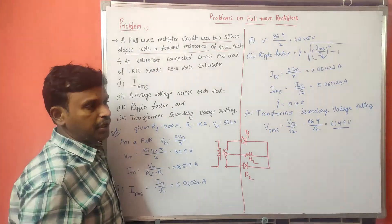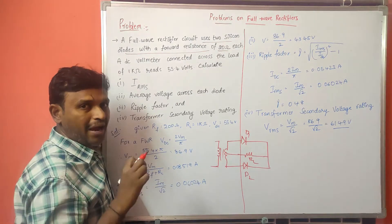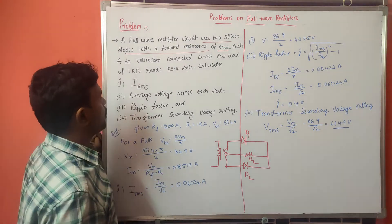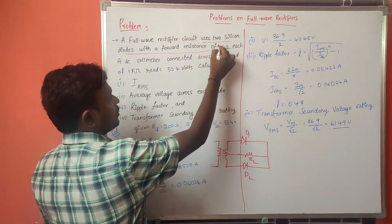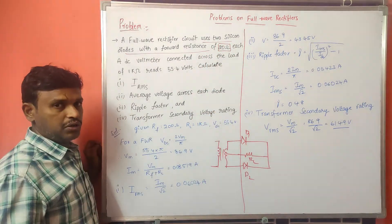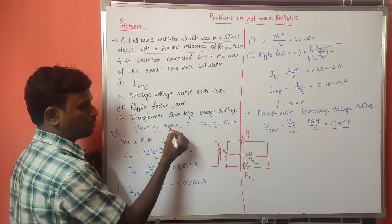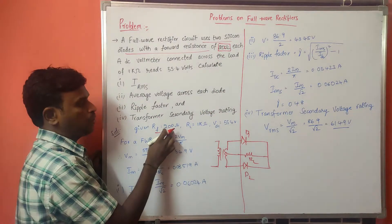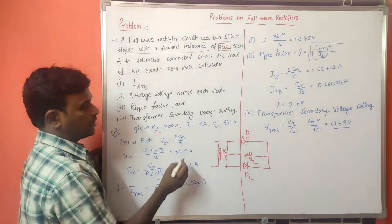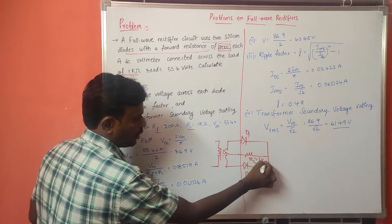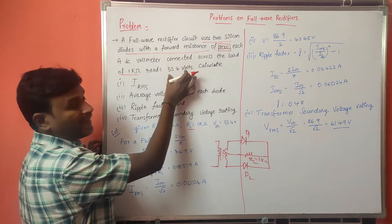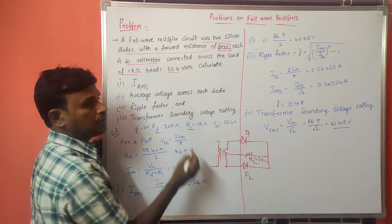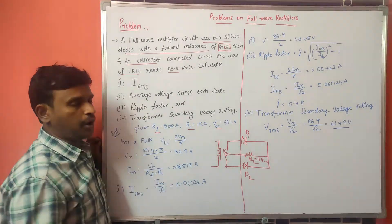So here what is given in this problem: we are using two silicon diodes D1 and D2, each having a forward resistance RF equal to 200 ohms. A load RL is connected equal to 1 kilo ohm. The DC voltmeter reads 55.4 volts, so VDC is equal to 55.4 volts.